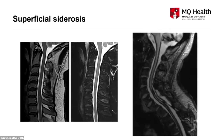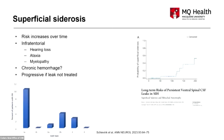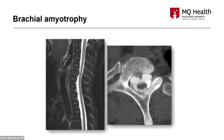Superficial siderosis — the next speaker will cover this in detail, but briefly: imaging evidence can be very subtle. I saw a man who had had a spinal cord ependymoma removed 20 years ago with an iatrogenic pseudomeningocele dismissed as irrelevant by previous neurosurgeons, but he presented with complete deafness, spasticity, and ataxia with very severe siderosis. Different types of CSF leak have different rates of superficial siderosis — type 1a is most likely to be associated with it, whereas fistulae have a relatively low incidence.